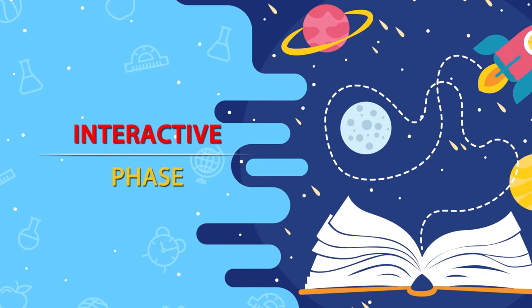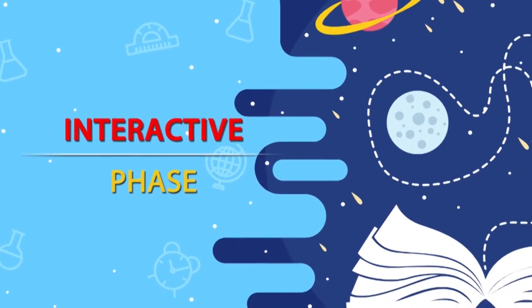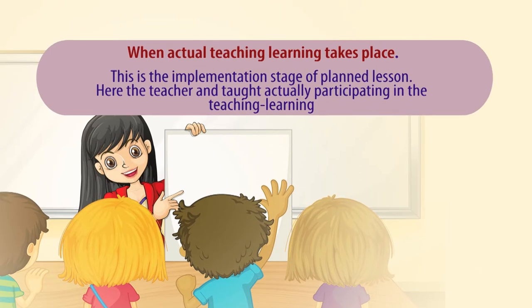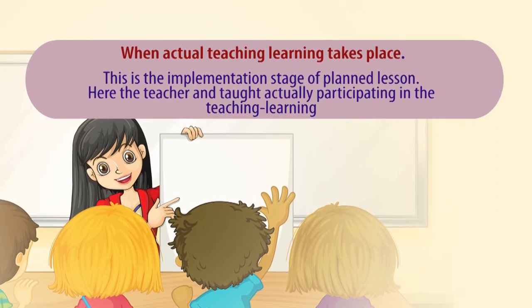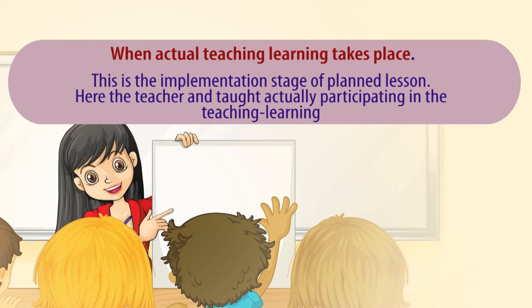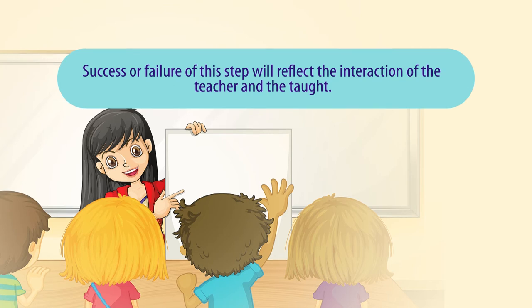The next phase is the interactive phase, also known as the execution phase. In this phase we implement what has already been planned. This is when actual teaching-learning takes place — the implementation stage of the planned lesson. The teacher and taught actually participate in the teaching-learning process. The teacher uses a number of strategies for achieving the goals already set, and whenever learners face problems in understanding, the teacher improvises and gives more examples.